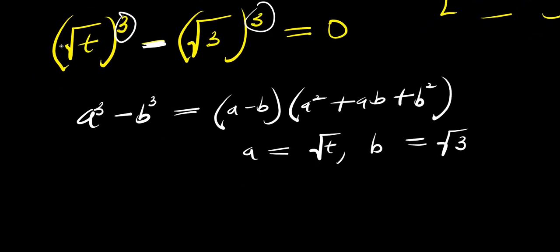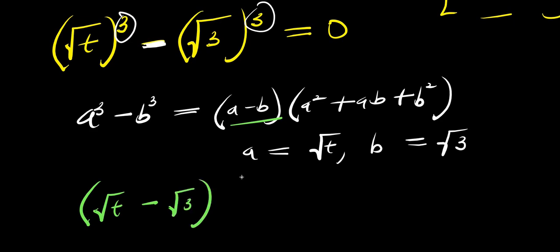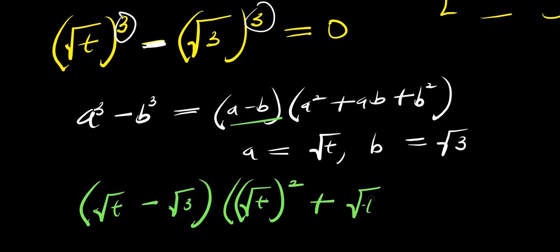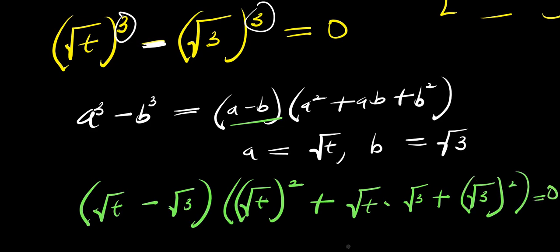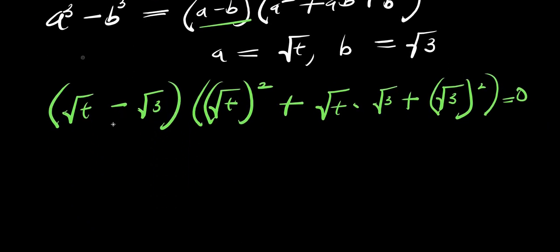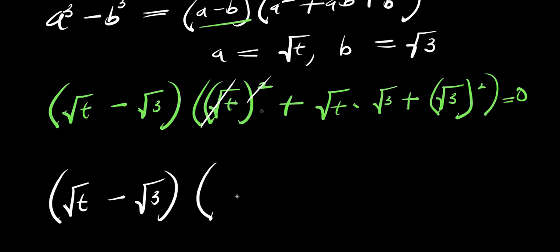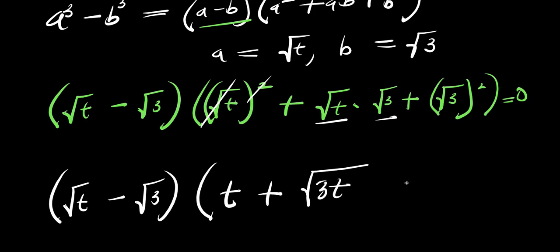In which my a equals root t and b equals root three. So I have: root t minus root three, times — a squared is root t squared, plus ab which is root t times root three, plus b squared which is root three squared — and this equals zero. Simplifying: root t minus root three, times t plus square root of three t plus three, equals zero.